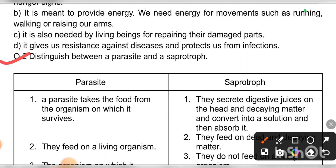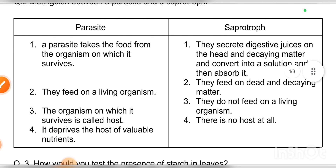The next question is: distinguish between a parasite and a saprotroph. Number one: a parasite takes food from the organism on which it survives. A saprotroph secretes digestive juices on dead and decaying matter, converts it into a solution, and then absorbs it.